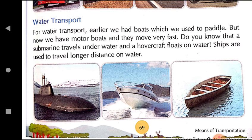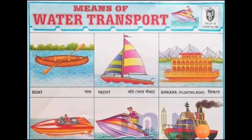These are some means of water transport. You can see a boat, a yacht — a boat with sails mainly used for water sports — and a shikara, which is like a floating house on water. These houseboats are made of wood, float on water and have different rooms, a kitchen and toilet. They are mainly found in Kashmir and in Kerala's backwaters. You can also see a motor boat, which is run by an engine, unlike normal boats which have paddles.